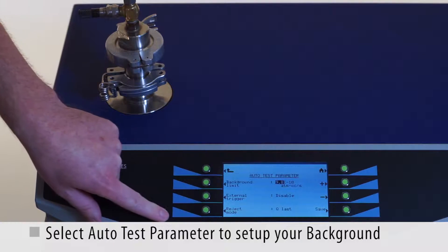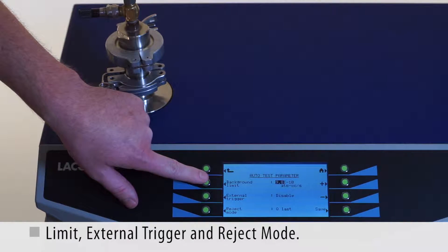Select Auto Test parameter to set up your background limit, external trigger, and reject mode.